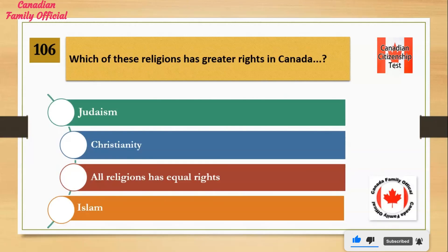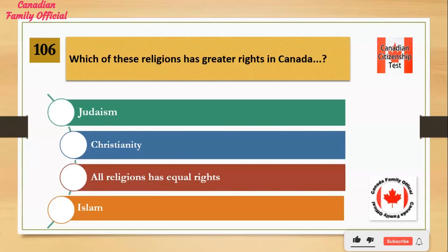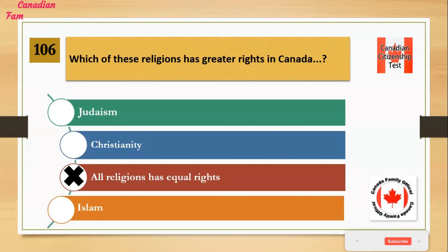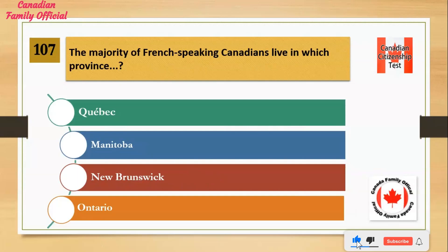Which of these religions has greater rights in Canada? Number 1: Judaism. Number 2: Christianity. Number 3: All religions have equal rights. Number 4: Islam. And the answer is all religions have equal rights.